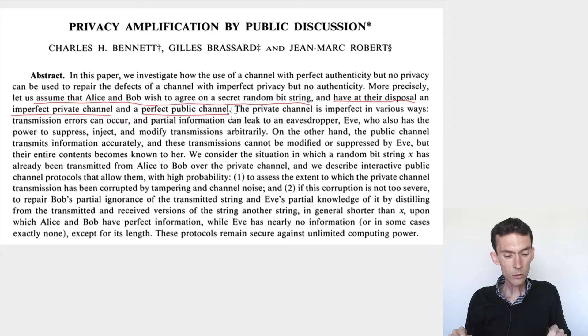These two resources are going to come out of the key distribution protocol. The perfect public channel is something they'll always have, we'll call it the authenticated channel. And the imperfect private channel is going to be implemented by all the prior stages of the key distribution protocol. But focusing just on privacy amplification for this week, we just imagine that we have these two things: imperfect private channel, perfect public channel.